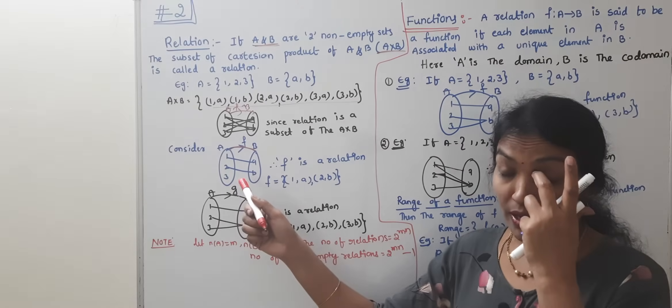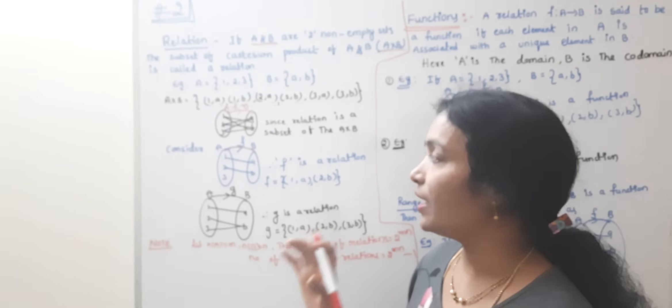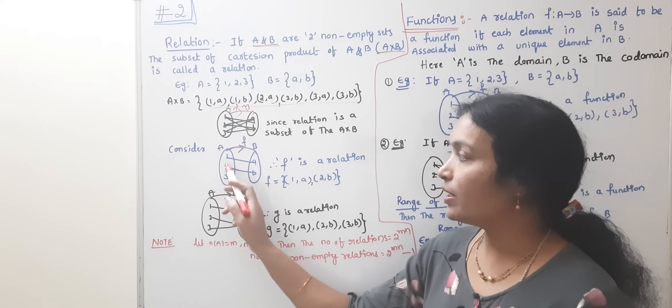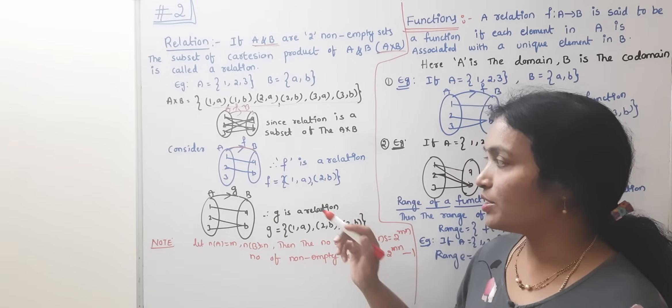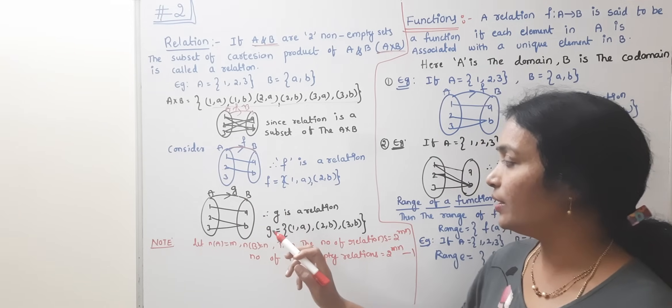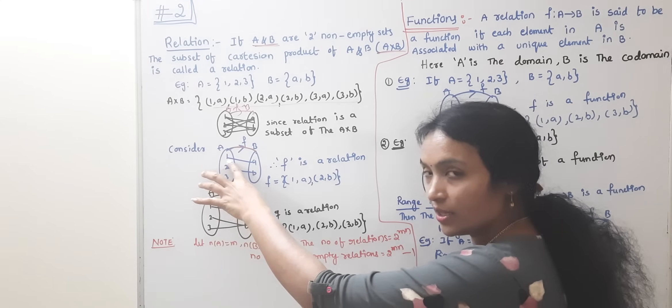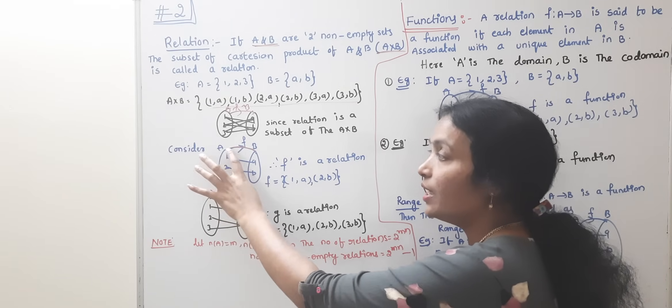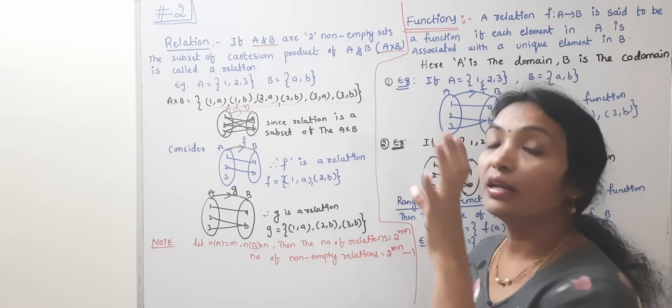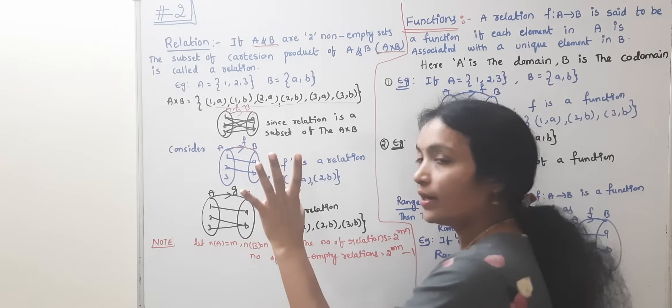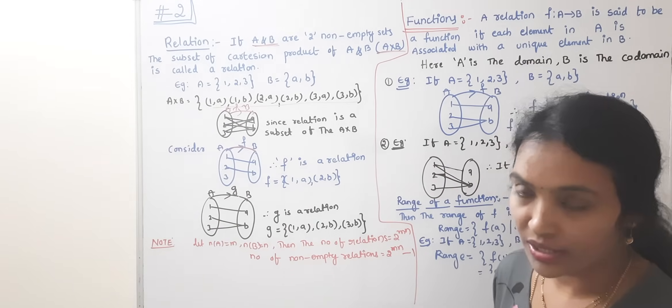Now, I am going to write a relation and check whether it is a relation or not. Here we have 1, 2, 3 and A and B. We have 1A, 2B - this is a relation between those two sets.